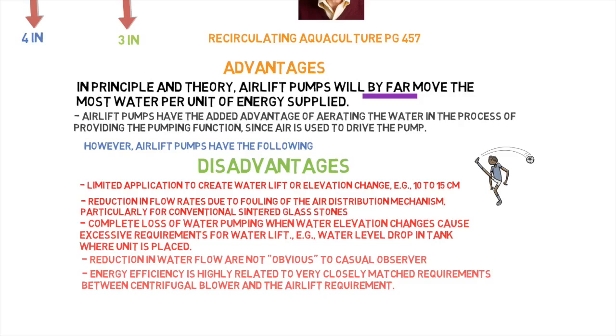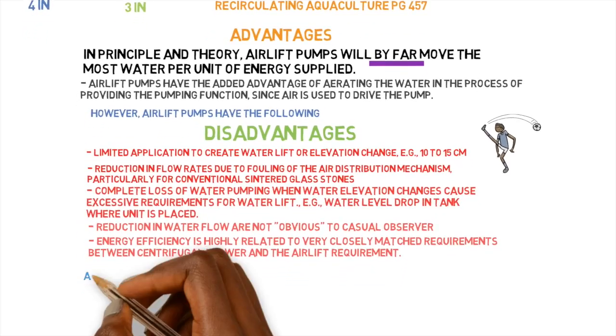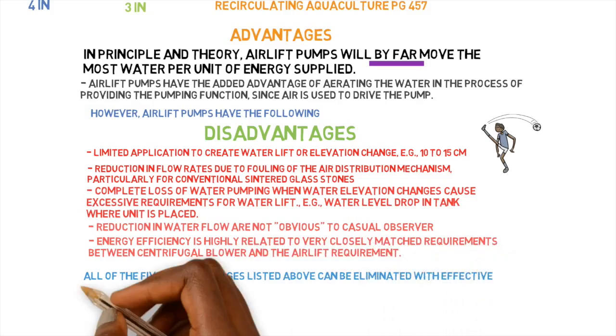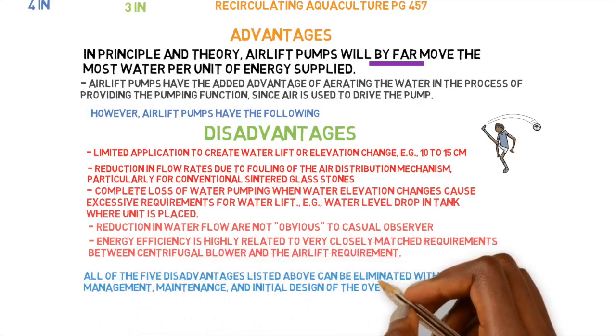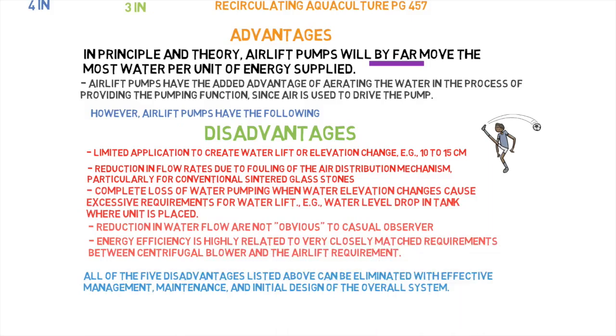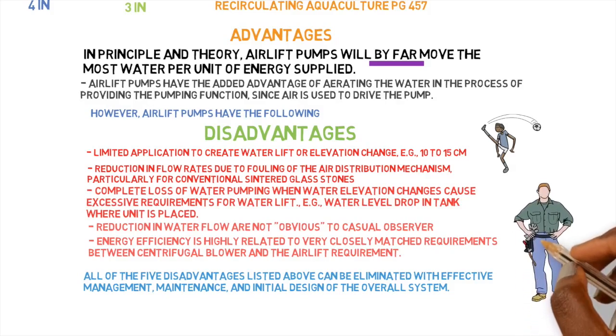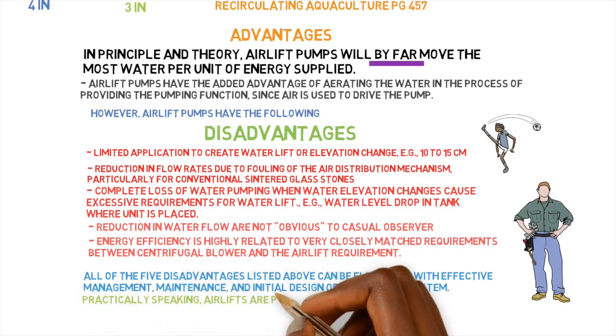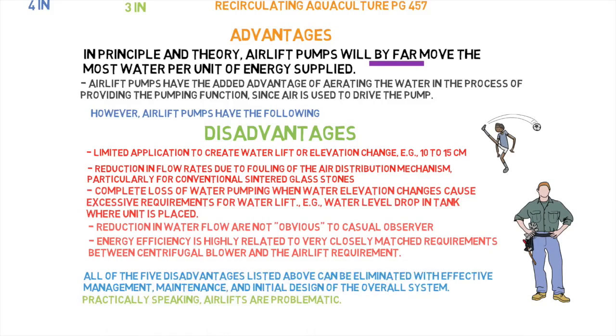So continuing on with the disadvantages, Timmons goes back and then he kind of explains and then gives his conclusion on the air lift pumps. All of the disadvantages listed above can be eliminated with effective management, maintenance, and initial design of the overall system. So basically, if you want to get this thing to work, he's saying that you need to design it very well and you need to be a maintenance man, an aquaponic maintenance man. Practically speaking, air lifts are problematic.